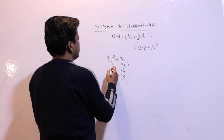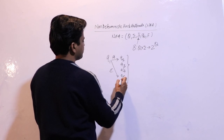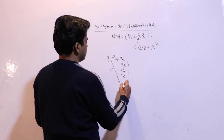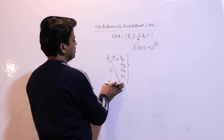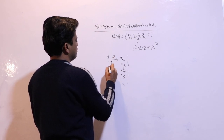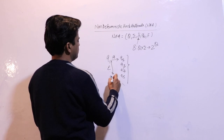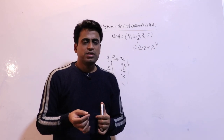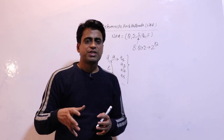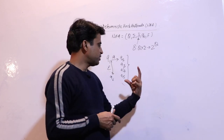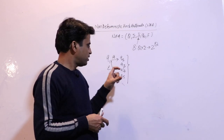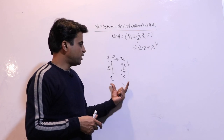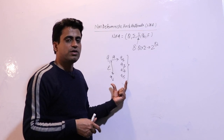Epsilon moves are also allowed in NFA. You can also do transitions with epsilon moves, like from state Q6. So NFA — non-deterministic finite automata — when you apply input on a state, you can move to n number of states in parallel. You have many choices, and you can also apply epsilon moves to go to any state. This is NFA — non-deterministic finite automata.